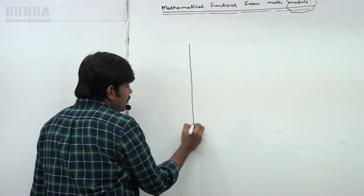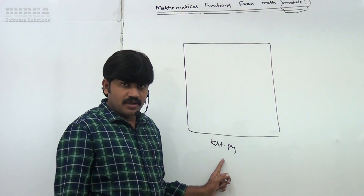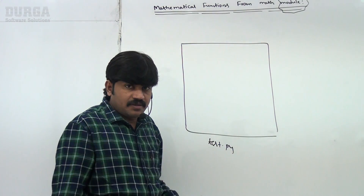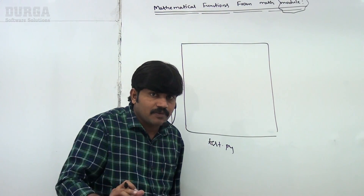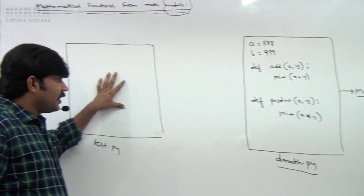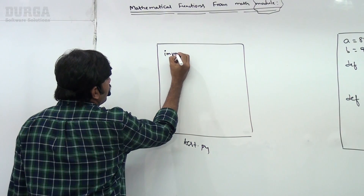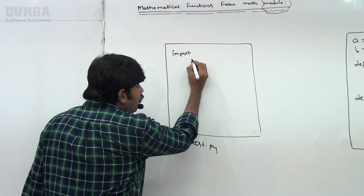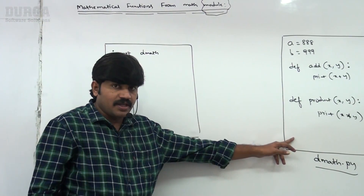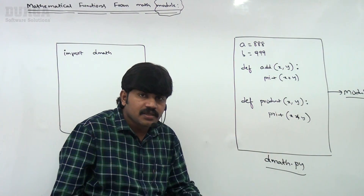I have another file — test.py. Here I want yard functionality and product functionality. The code is already available in d_math.py. Why rewrite that functionality when you can reuse the existing code? What I need to do is import that module. The line is: import d_math. A module is a Python file which contains a group of variables, functions, and classes.